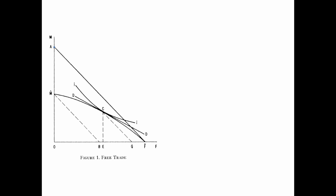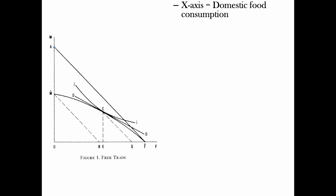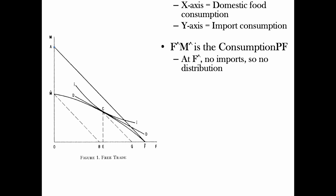Let's look at the consumption possibility frontier graph. We have wheat on the x-axis and TVs — imports M — on the y-axis. The curve F-hat, M-hat is the consumption possibility frontier. You can only produce food along the x-axis and decide how much to produce; depending on that, you can send some away and convert it into TVs. At F-hat there are no imports — everyone is a farmer — and all food produced is consumed at home.